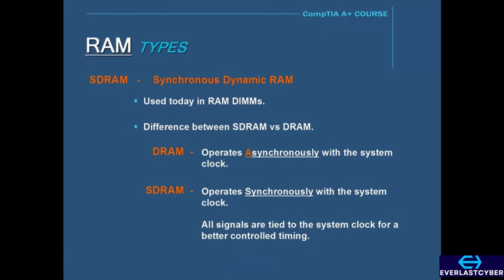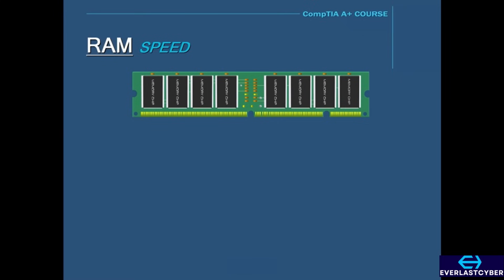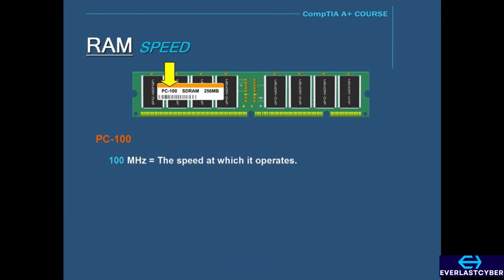SDRAM is rated at different speeds. For example, a stick of SDRAM could be labeled PC100. The 100 equals the speed at which it operates, which is 100 MHz. And since SDRAM only comes in 64-bit modules, it has an 8-byte-wide bus, because 64 divided by 8 equals 8. So to figure out the total bandwidth of PC100, you multiply 100 MHz times 8 bytes, which equals 800 MB per second.